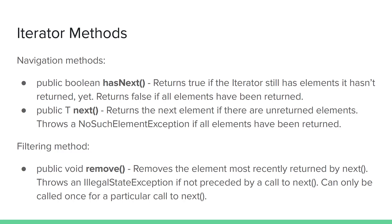The two navigation methods that all iterators have are: a boolean hasNext method that returns true as long as there is still some element that the iterator hasn't returned yet, and returns false once it's finally returned the last element. The hasNext method is usually used in loop control so you continue getting the next element as long as hasNext is true.